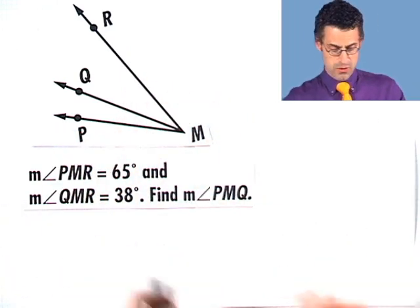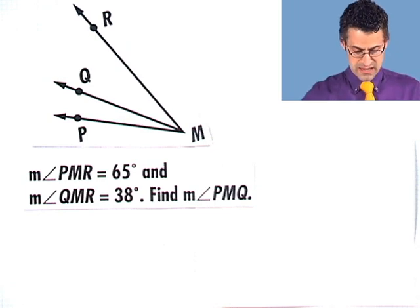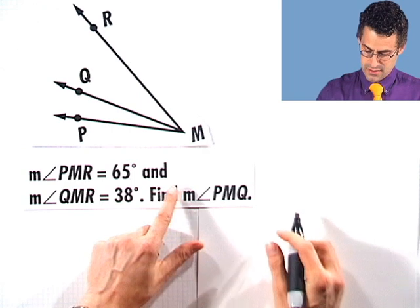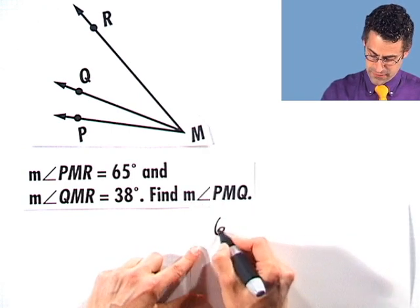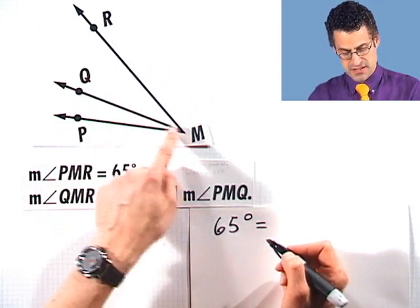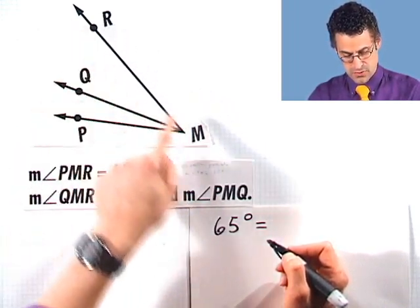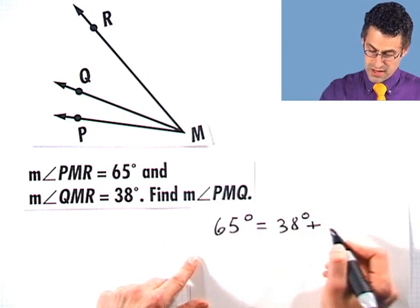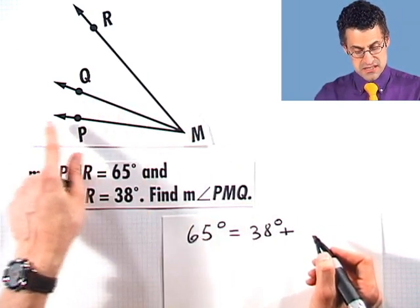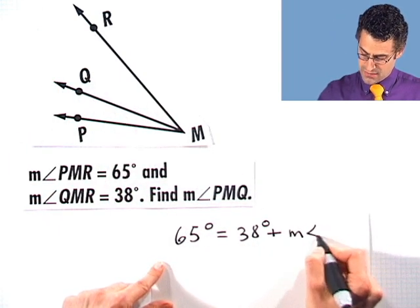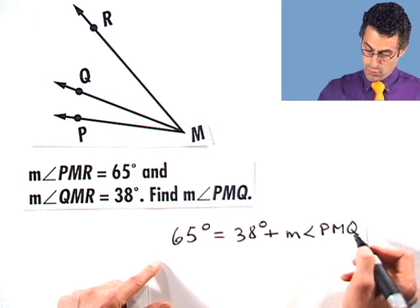Now, if we apply that here, what would we see? We would see that the entire measure is 65 degrees. And what does that equal? It equals the measure of this angle here, which we know is 38 degrees, plus the measure of this mysterious angle, which I'll just write as the measure of angle PMQ.